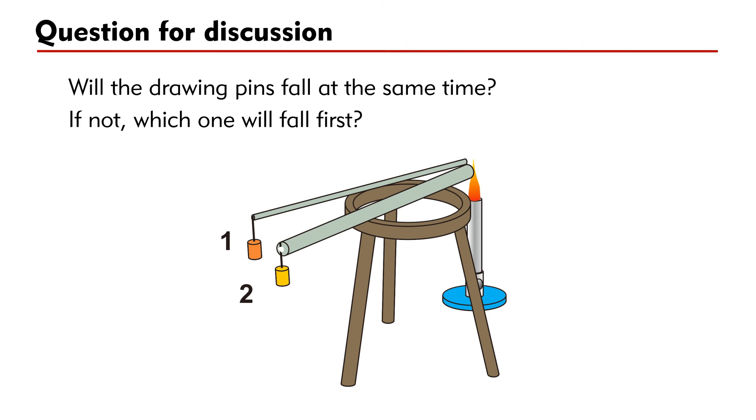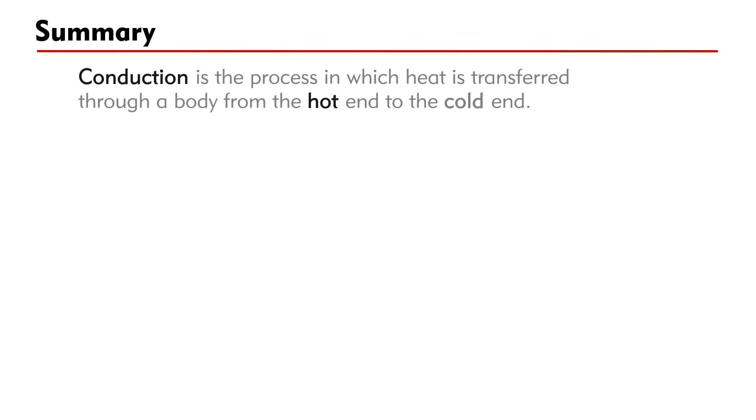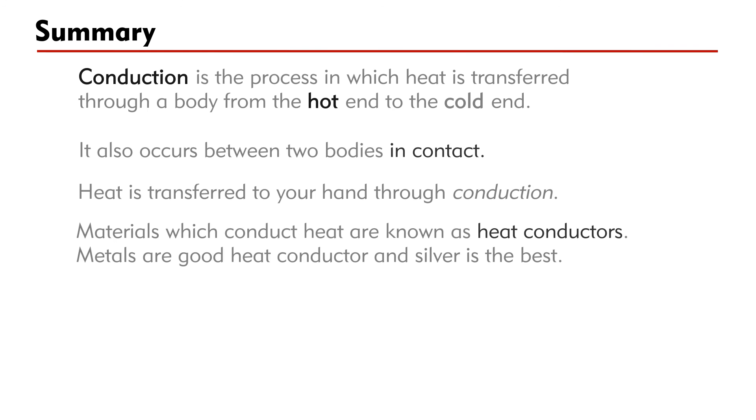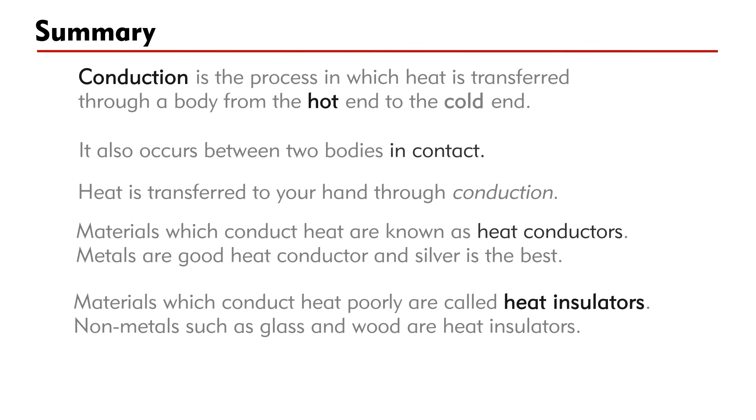In summary, conduction is the process in which heat is transferred through a body from the hot end to the cold end. It also occurs between two bodies in contact. When you hold a cup of hot tea, you feel warm. We say that heat is transferred to your hand through conduction. Materials which conduct heat are known as heat conductors. Metals are good heat conductors, and silver is the best. Materials which conduct heat poorly are called heat insulators. In general, non-metals such as glass and wood are heat insulators. A vacuum cannot conduct heat at all.